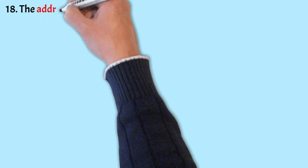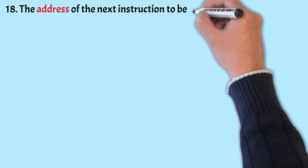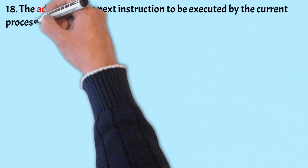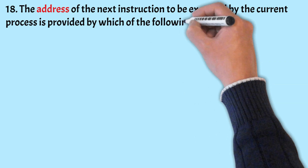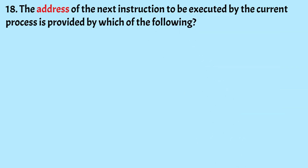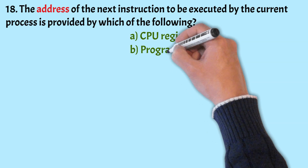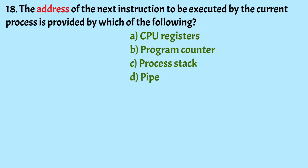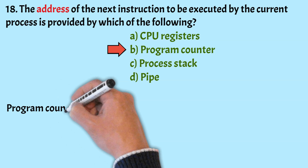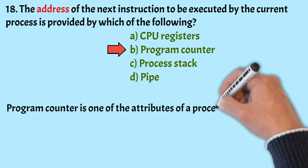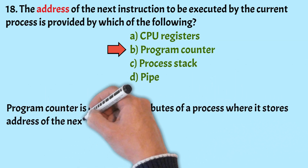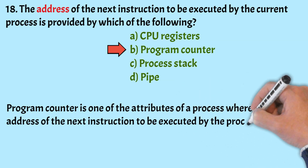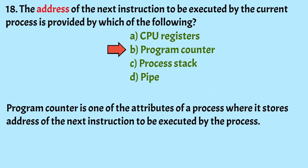The address of the next instruction to be executed by the current process is provided by which of the following? Options: CPU registers, program counter, program stack, pipe. The correct answer is Option B, program counter. The program counter is one of the attributes of a process where it stores the address of the next instruction to be executed by the process.